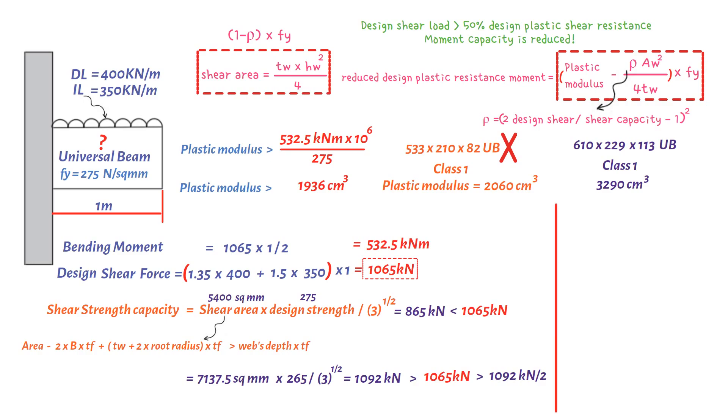So back to our example. Rho would be 2 times the design shear 1065 kilonewtons divided by shear capacity 1092 kilonewtons minus 1 squared. This results in a value of 0.9. Area web would be the web thickness 11.2 millimeters times the depth of the web 547.3, giving us a value of 6129.8 square millimeters.